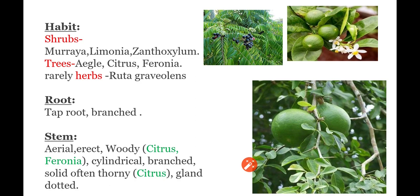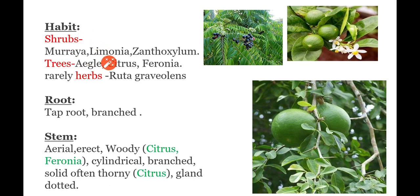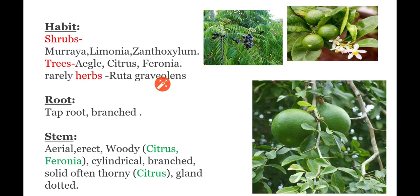Coming to habitat: most of the plants are mesophytes. Coming to habit: generally shrubs, trees, and herbs are present in this family. Examples of shrubs are Limonia and Murraya. Examples of trees are Aegle marmelos, Citrus, and Ferronia. Rarely herbs are present — example: Ruta graveolens.